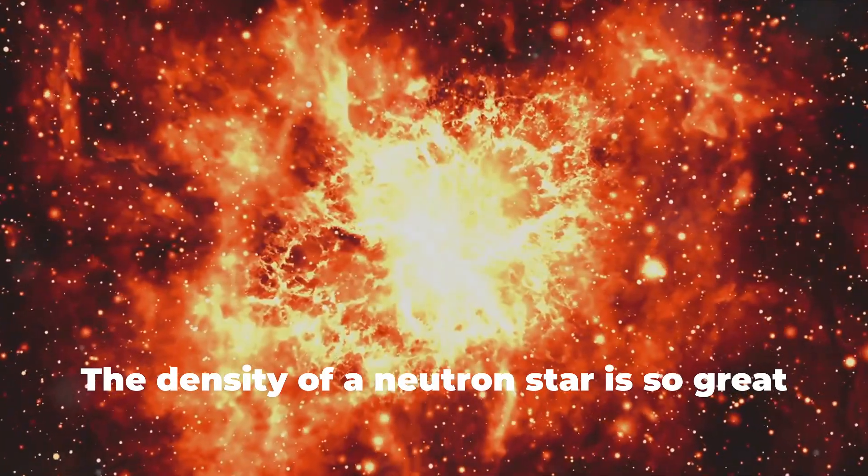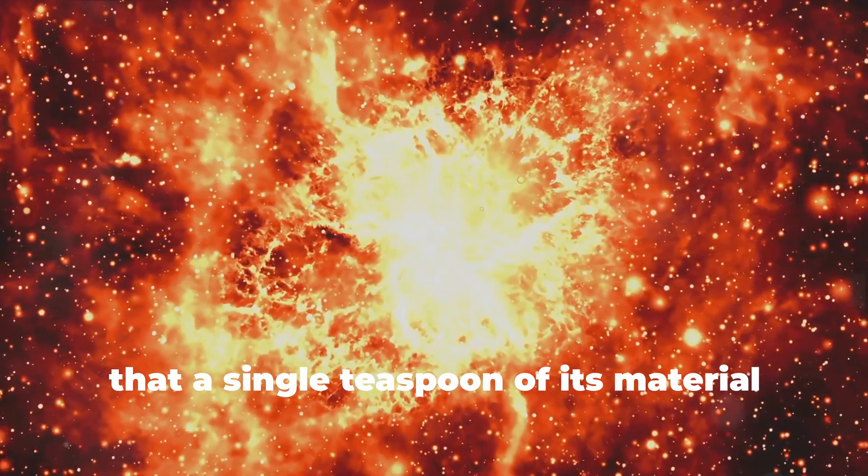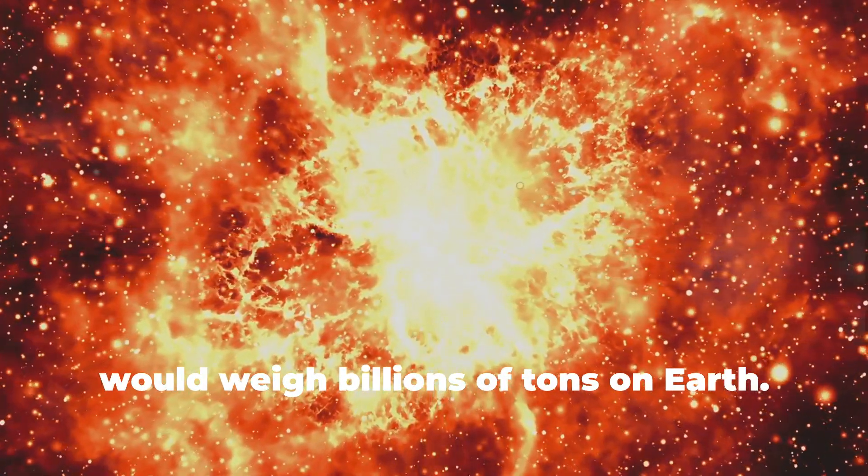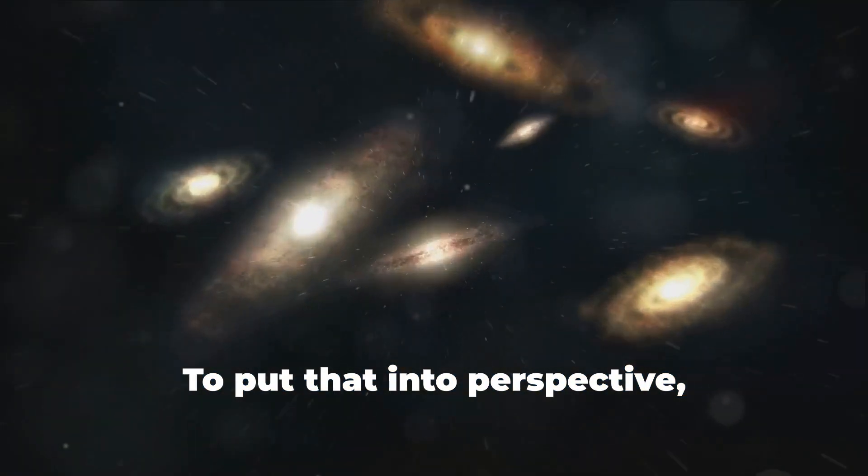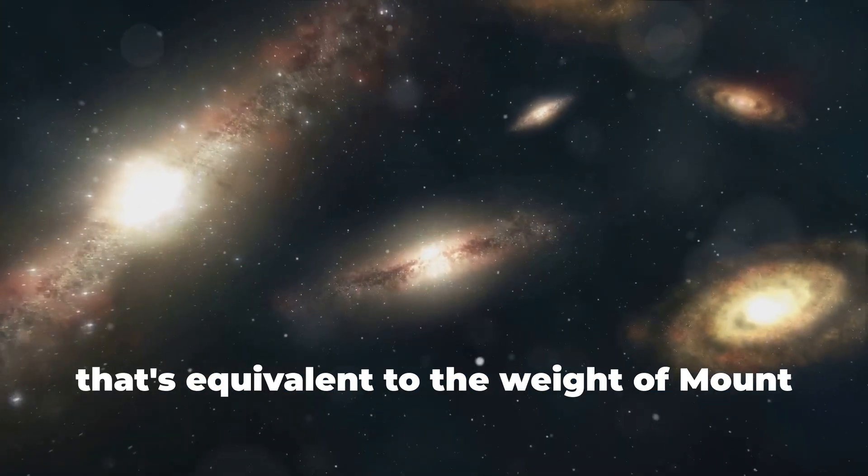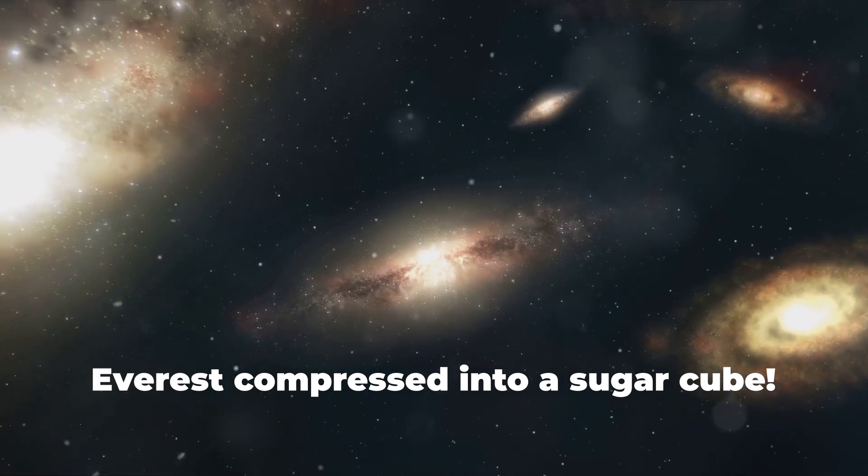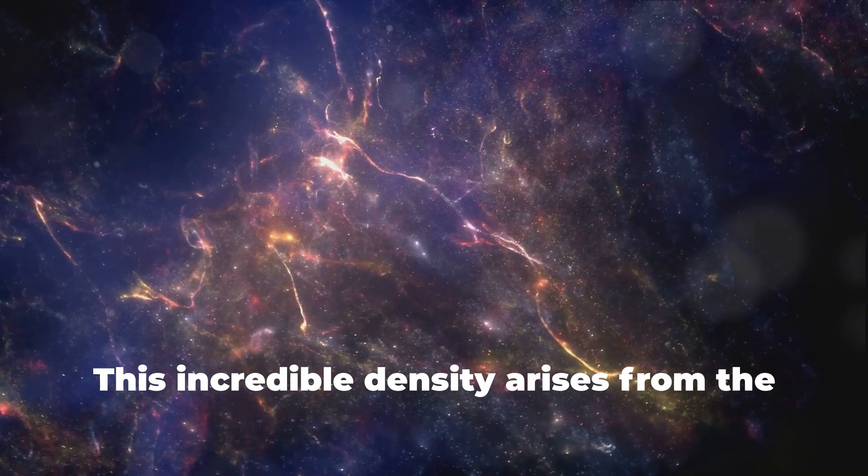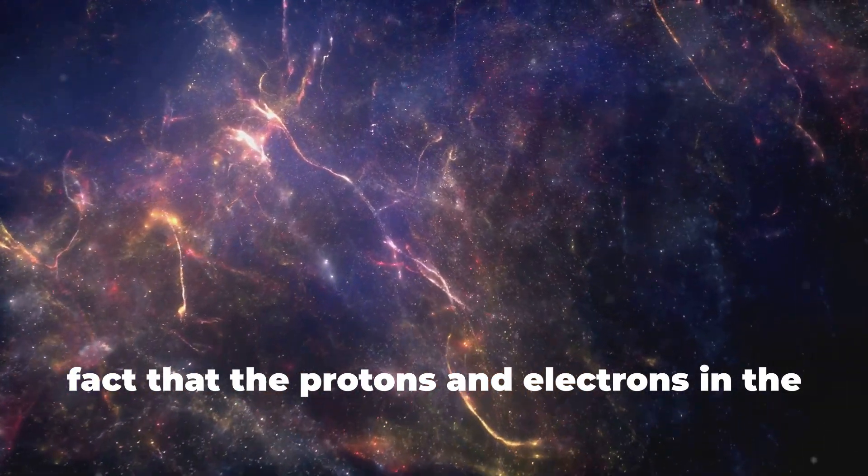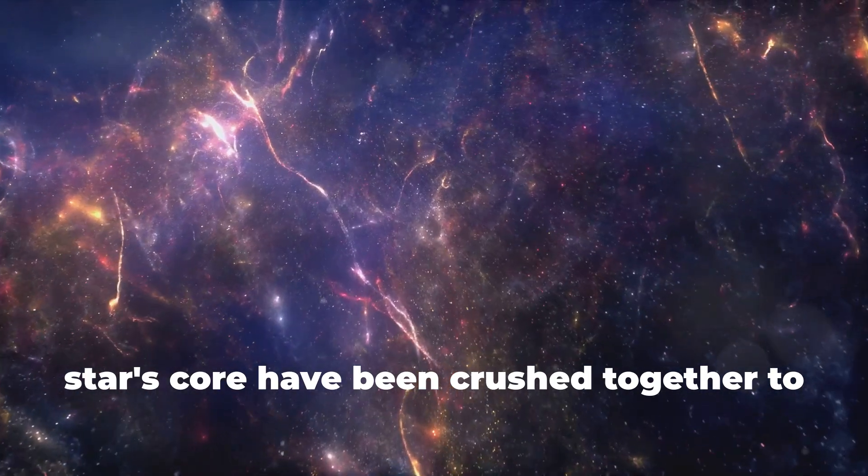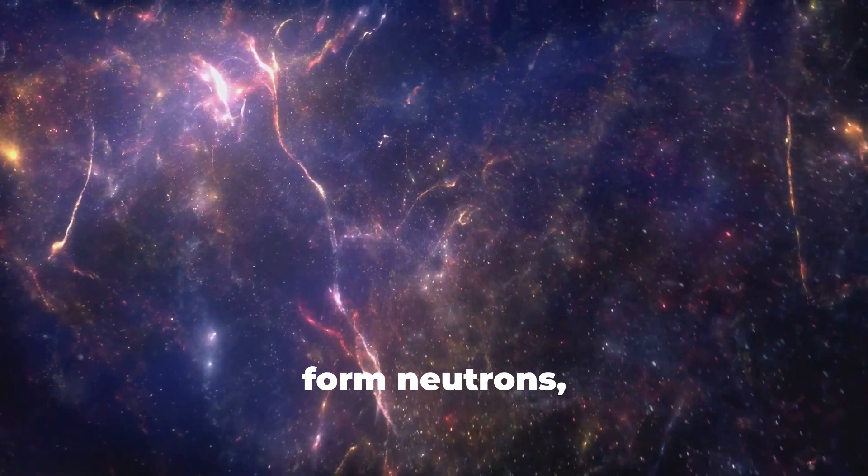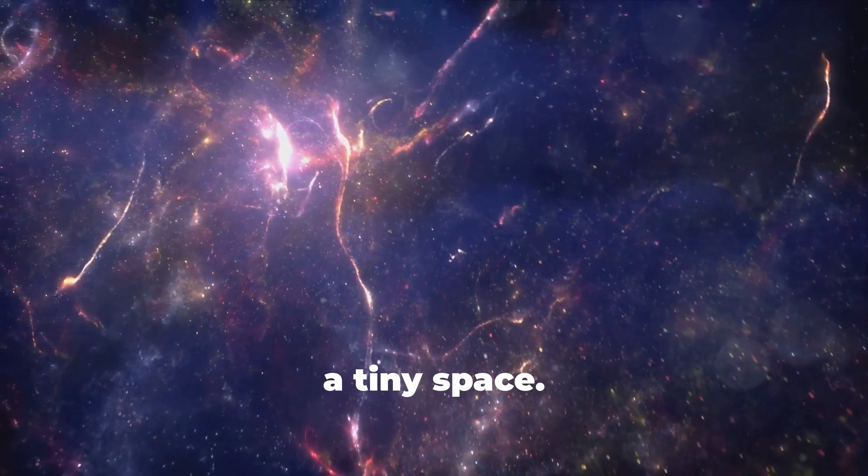The density of a neutron star is so great that a single teaspoon of its material would weigh billions of tons on earth. To put that into perspective, that's equivalent to the weight of Mount Everest compressed into a sugar cube. This incredible density arises from the fact that the protons and electrons in the star's core have been crushed together to form neutrons, packing an immense amount of matter into a tiny space.